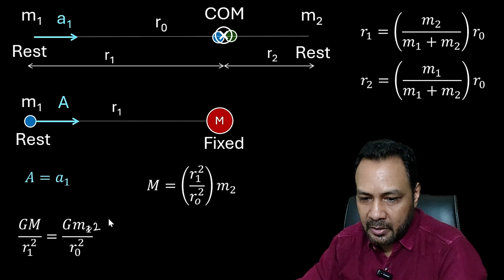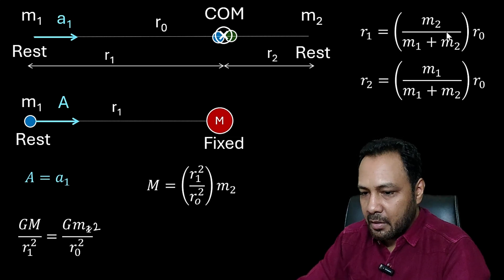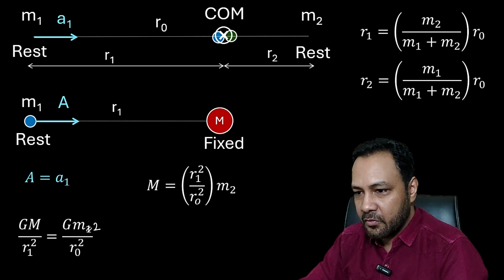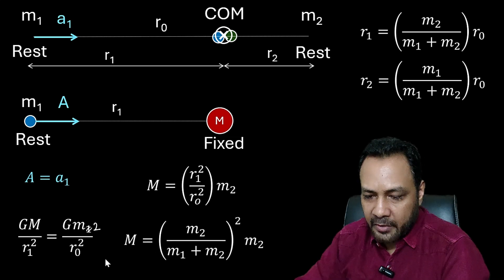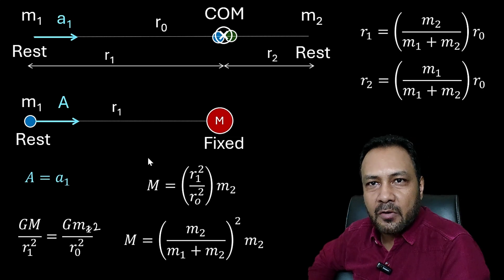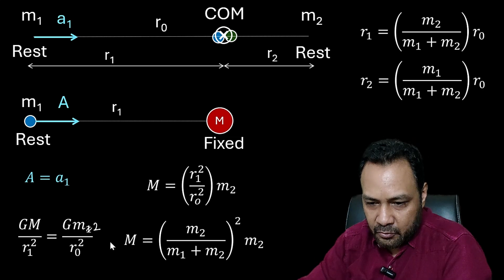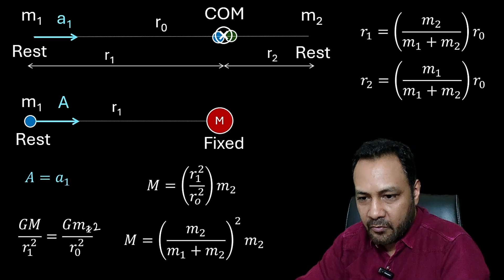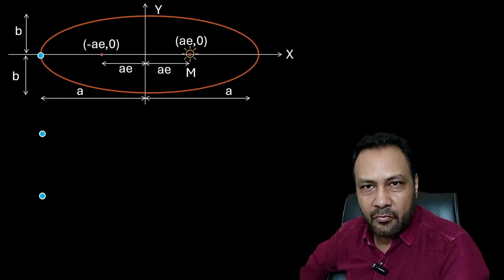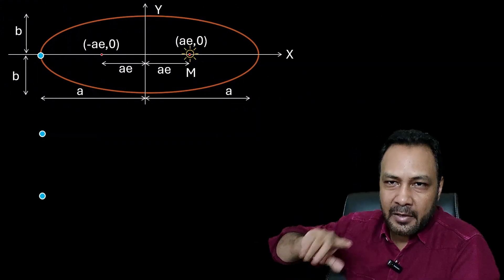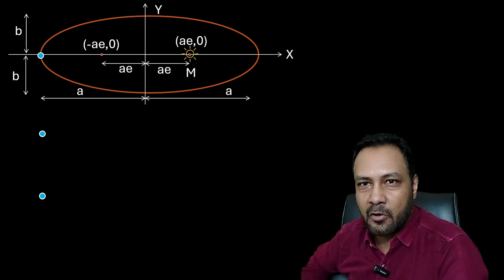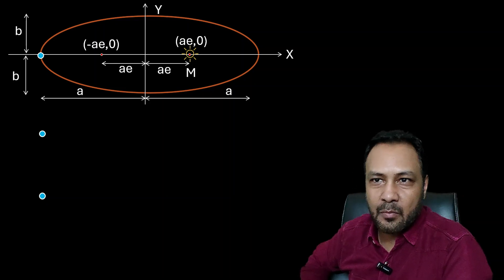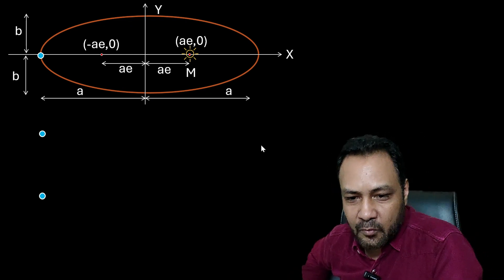The G's cancel, so capital M = (R1² / R0²)·M2. Substituting the value of R1 in terms of R0, we get capital M = (M2 / (M1 + M2))² · M2. That is the required equivalent mass. Now, in planetary motion, we know that a planet moves around the sun in an elliptical orbit, with the central mass at one of the foci.